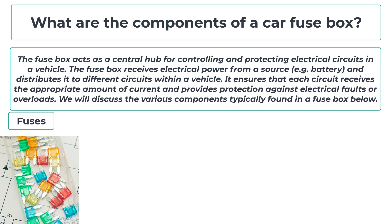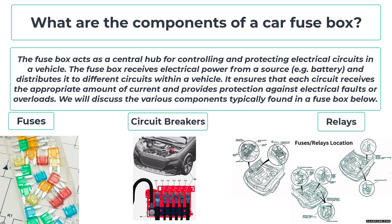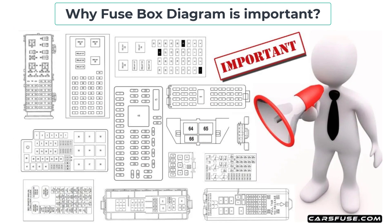Circuit Breakers are another type of protective device found in Fuse Boxes. Unlike fuses, circuit breakers can be reset after they trip due to overcurrent. They automatically detect abnormal electrical conditions and interrupt the circuit, providing protection against short circuits and overloads. Relays are electromagnetic switches that control the flow of current to various electrical components or circuits, allowing low-power signals to control high-power devices.